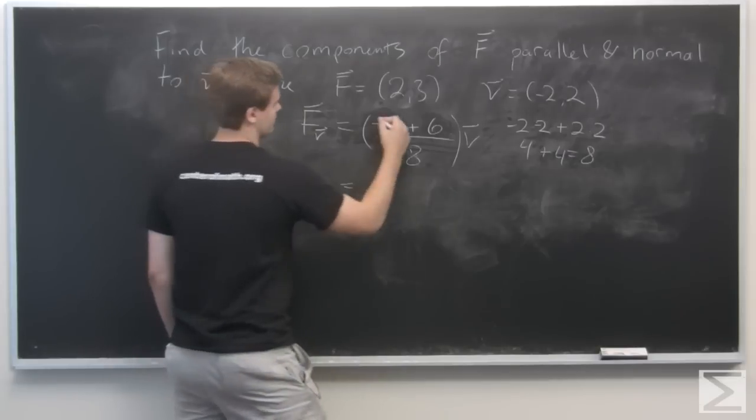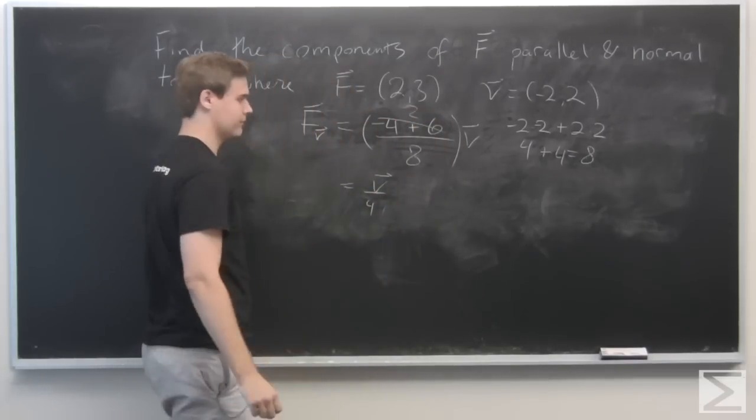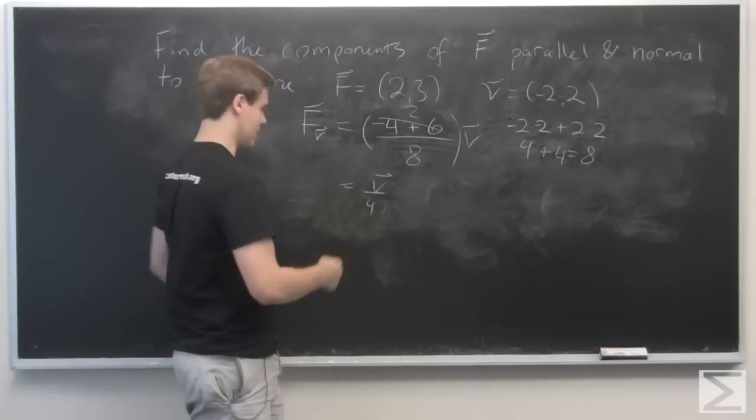Simplifying this, we see that this is 2, so we get v over 4. Okay, and now that we have that, we can solve for the component of f normal to v.